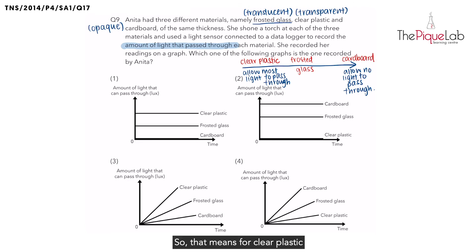So for clear plastic, I should see that it allows the most light to pass through. For cardboard, I should see that it allows no light to pass through - zero light. Let's take a look at the options. For option one, as time passes, the clear plastic allows the most light to pass through, the cardboard allows zero light to pass through, while the frosted glass allows some light to pass through. Is this what we discussed earlier? Yes. So option one is a possible answer.